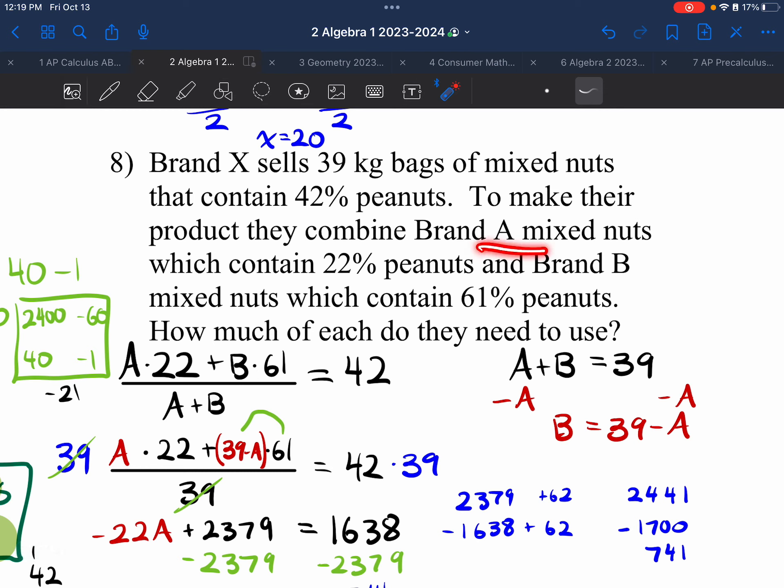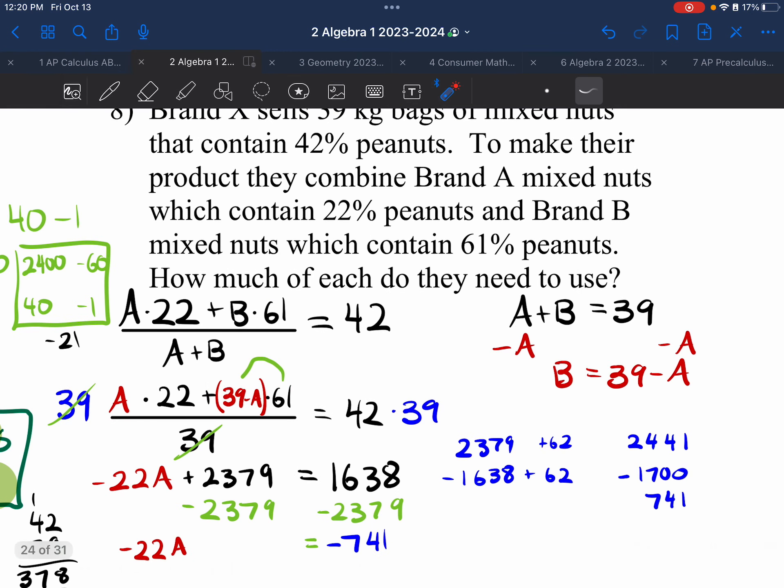So, I have A multiplied by 22. A times 22. I have B times 61. B times 61. All divided by the quantity A and B together. A plus B. And that combines to make 42% peanuts. The second equation was adding them together to get 39. Adding them together to get 39. Everything seems good so far. We subtracted A on both sides, giving us B is equal to 39 minus A. Everything looks good so far. 39 minus A got plugged in for B. So B turned into 39 minus A. And then I distributed the 61. 61 times 39. We already checked the math there.